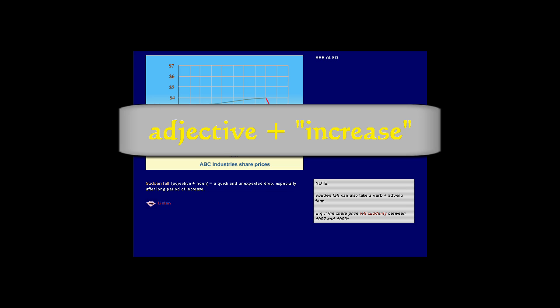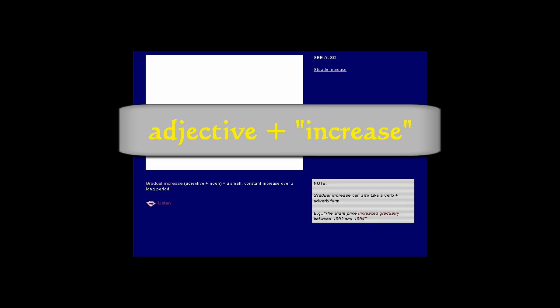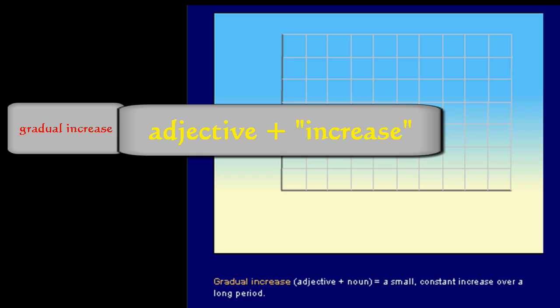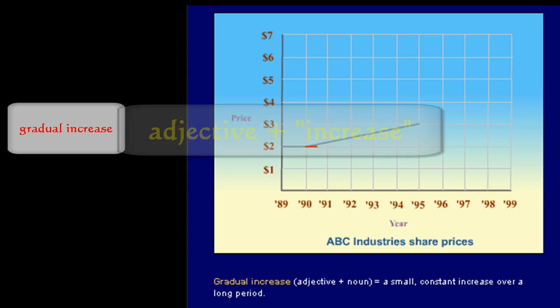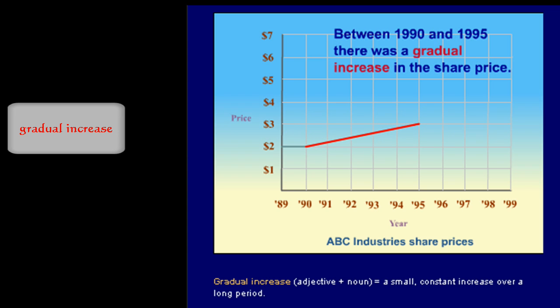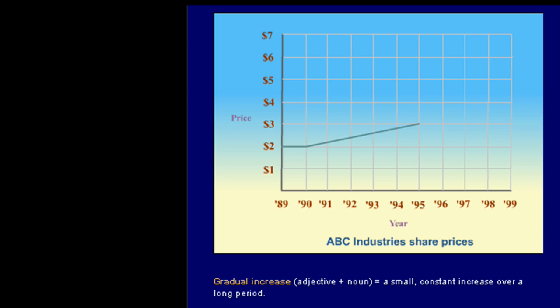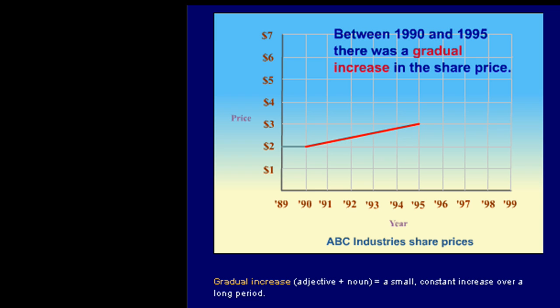And now adjective plus the word 'increase'. Gradual increase. Between 1990 and 1995 there was a gradual increase in the share price, or we can say the share price increased gradually. Gradual increase.